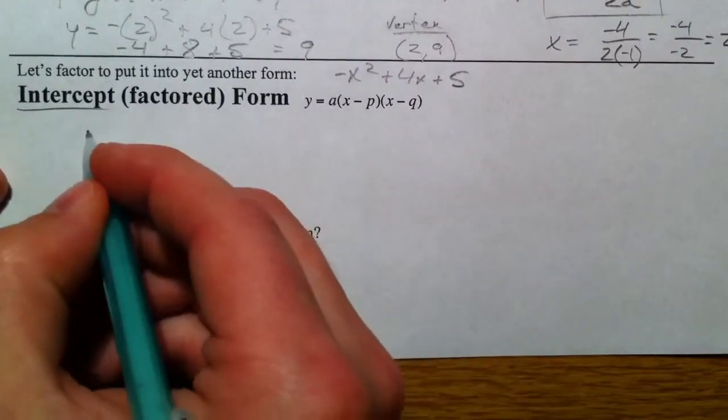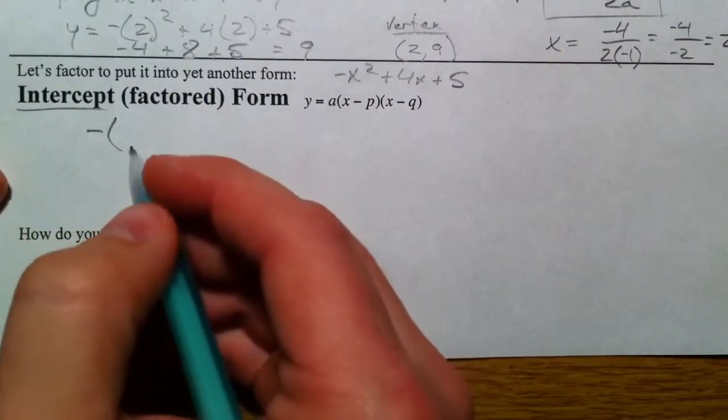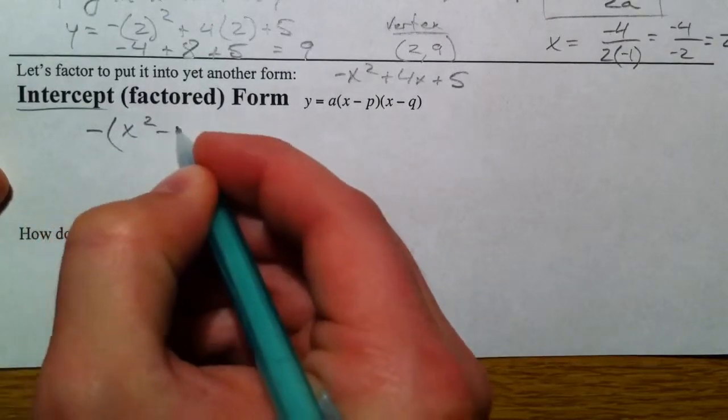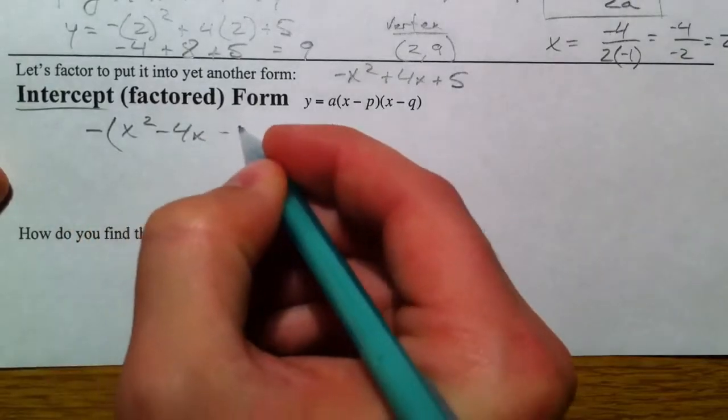There you have it. So let's factor this. I'm going to factor out the negative first. So you get positive x squared minus 4x minus 5.